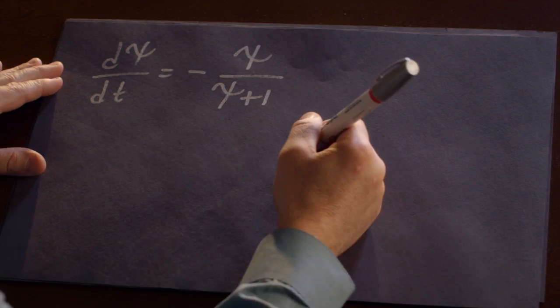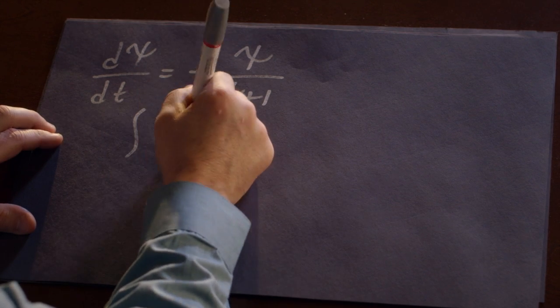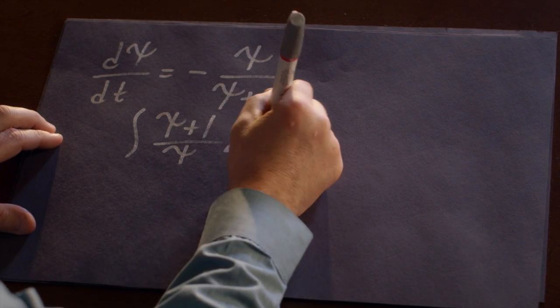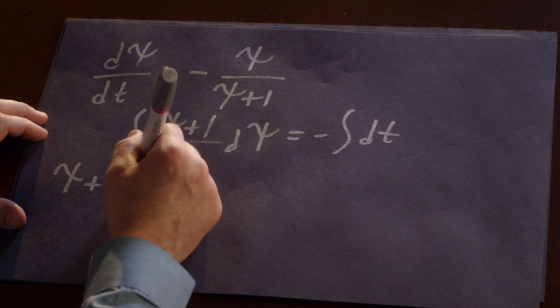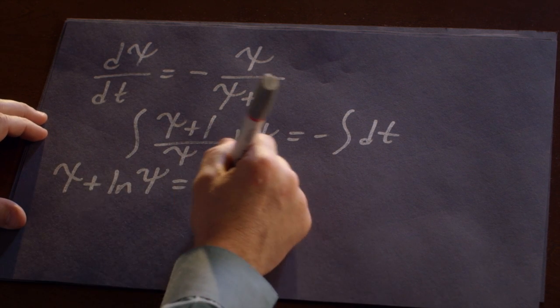That is, I can put all of the phi's on one side and all of the t's on the other side. And both sides are elementary functions that can be anti-differentiated. And we end up with psi and a logarithm of psi.